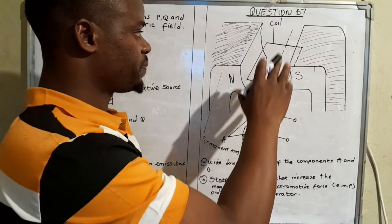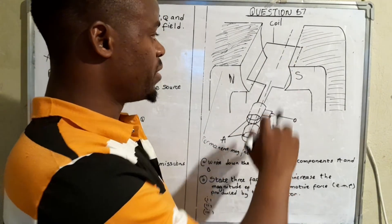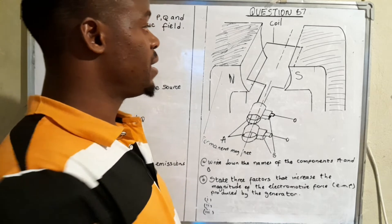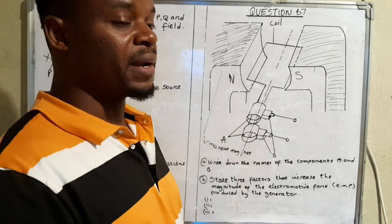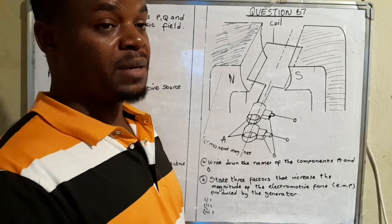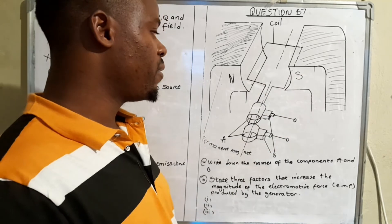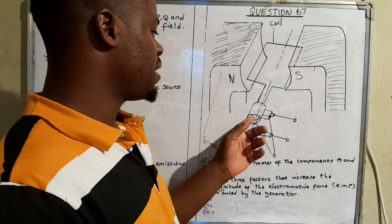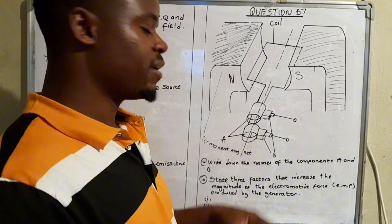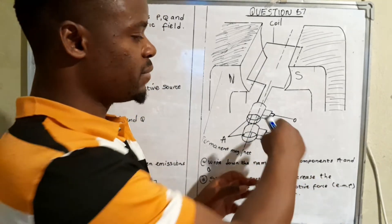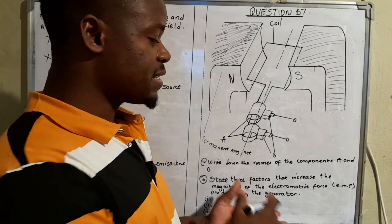Let's start with this question. This question has to do with a generator. What we have here is the magnet, a permanent magnet. Then at the arm of the magnet we have a coil. And then at the far end we have these rings, and on the rings there are those that are attached to them. Let's answer the questions that follow.